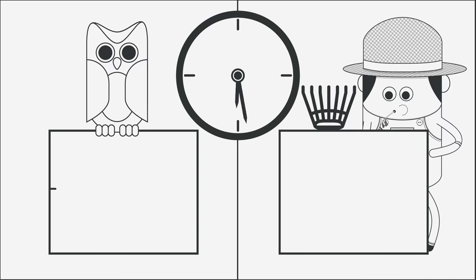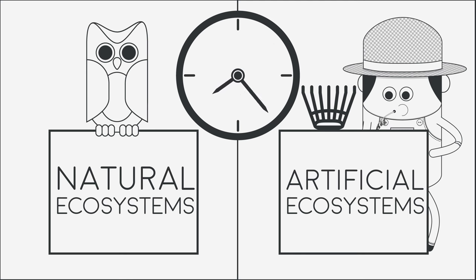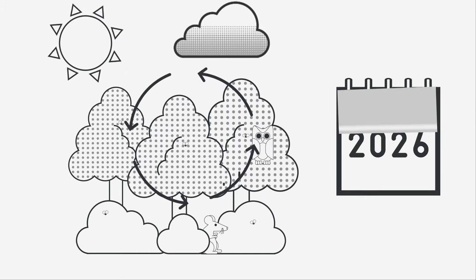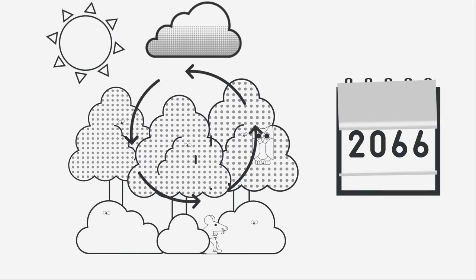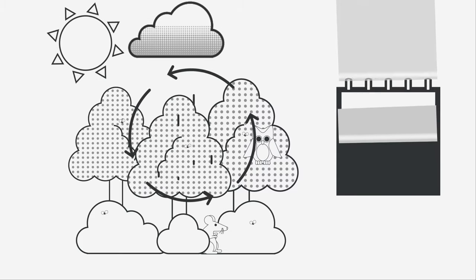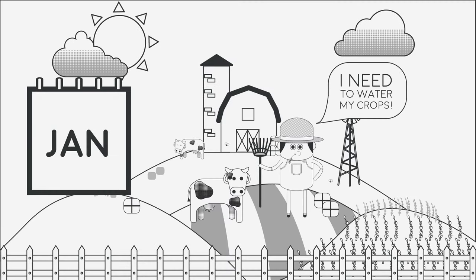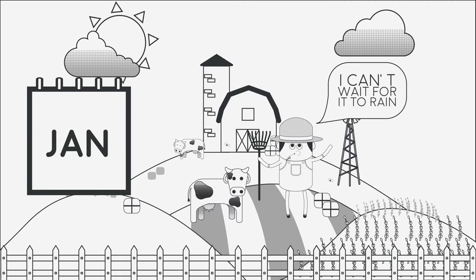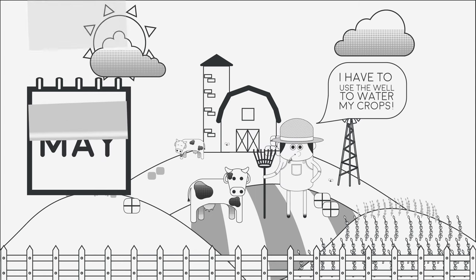Another important difference between natural and artificial ecosystems is the time scale used to measure the activity within each ecosystem. For example, water cycling in natural ecosystems generally requires decades or centuries for the water to complete a full cycle and return to the designated starting point. In an artificial ecosystem, on the other hand, the entire water cycle may only take a few weeks or months before its return to its starting point.